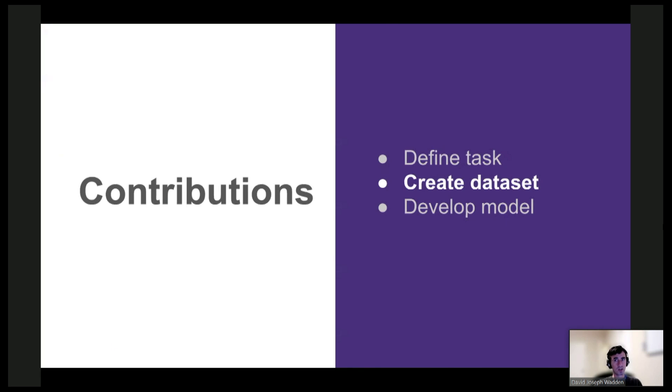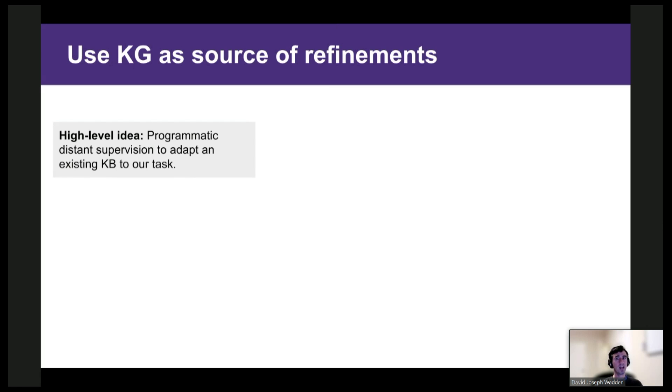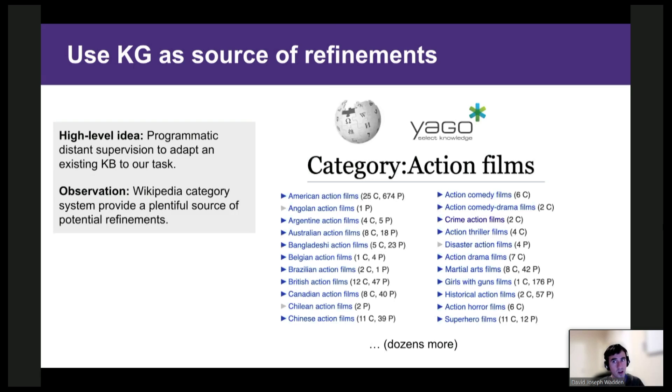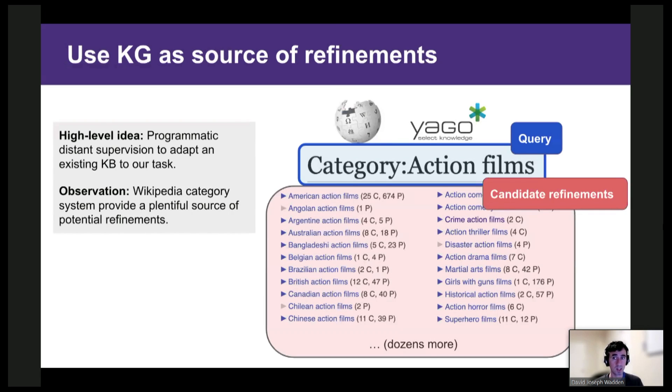So now I've defined the task, and next I'll describe how we created a dataset of training demonstrations. The high-level idea is that we're going to use programmatic distance supervision to adapt an existing knowledge base to our task. And we're going to build on the YAGO knowledge base, which uses the Wikipedia category system as its taxonomy. So here I'm showing the page for the Wikipedia category action films. And the key insight here is that the parent query or the parent category resembles a query, and the subcategories, things like action thriller films, look like potential refinements. So our goal is to create a refinement set for the query by selecting the k best subqueries that best satisfy our evaluation criteria. And the way we do this is to reason over the answers to the subcategories.